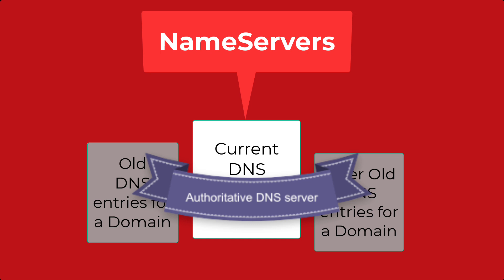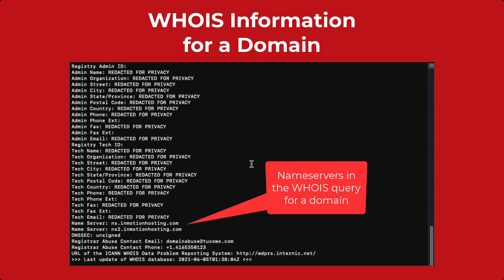This way, when a domain moves to a new location, DNS servers know which server to use to get the correct information about that domain name. Name servers can be identified in the WHOIS information for a domain. You may see them in pairs, but other domain registrars can have even more name servers. Here's an example of InMotion's name servers.